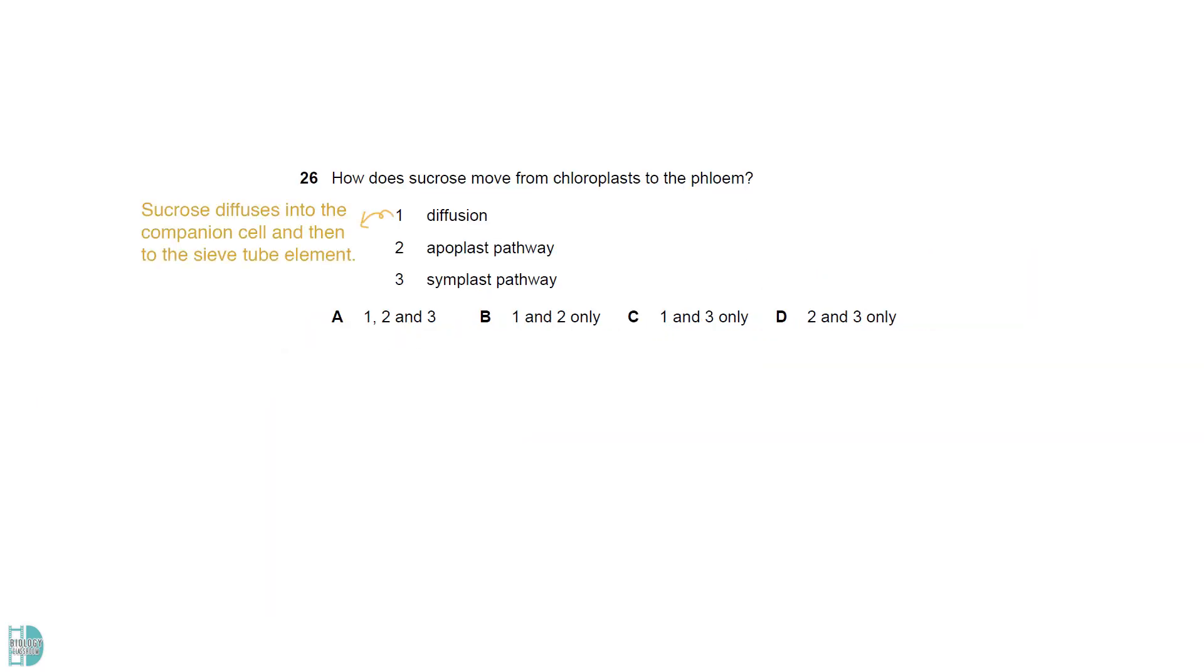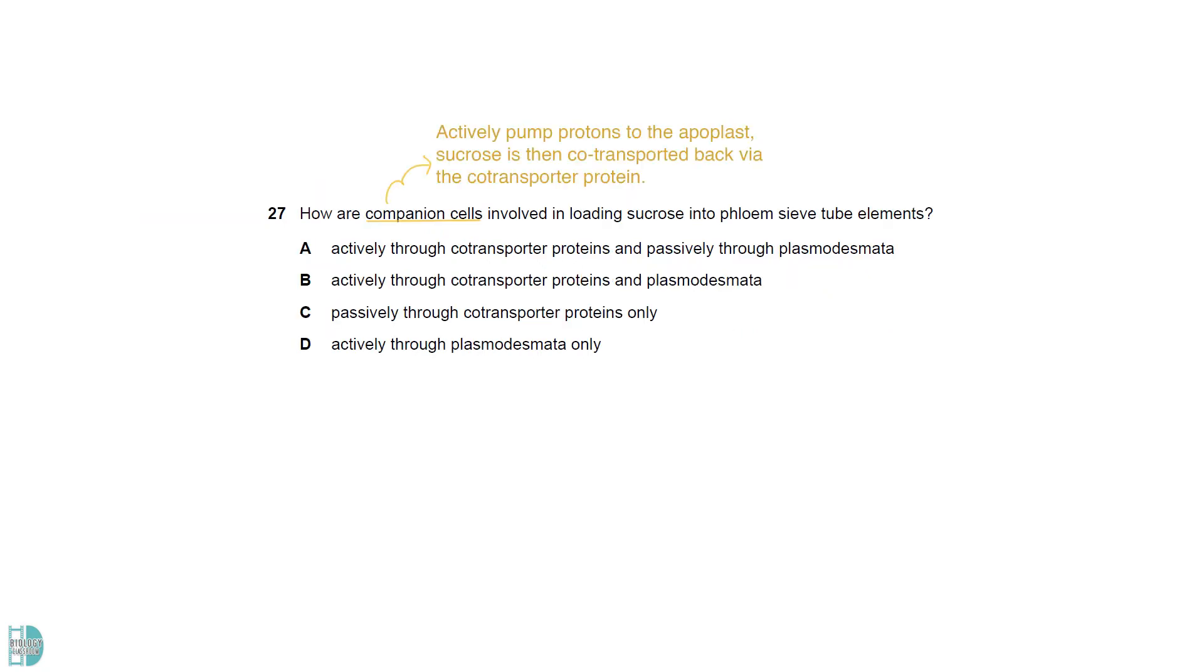Sucrose can diffuse into the companion cell and then to the sieve tube element. Since it diffuses in water, it can also move by apoplast and symplast pathway. Companion cells actively pump protons to the apoplast, so that sucrose can be co-transported back via the co-transporter protein. Then, due to the increased sucrose concentration in the companion cell, sucrose would diffuse passively into the sieve tube element via the plasmodesmata.